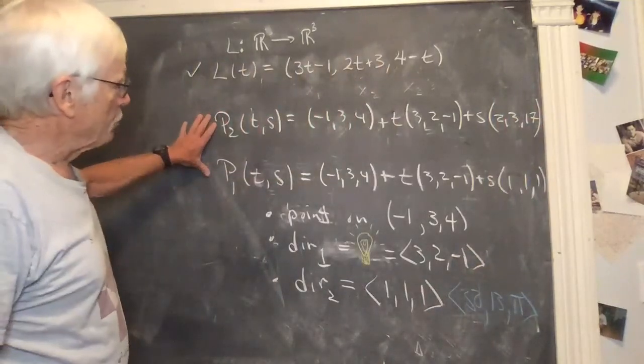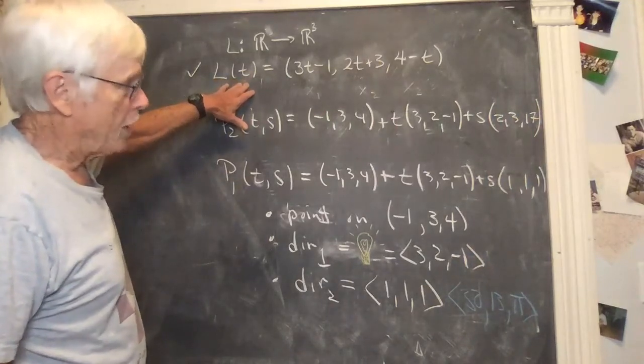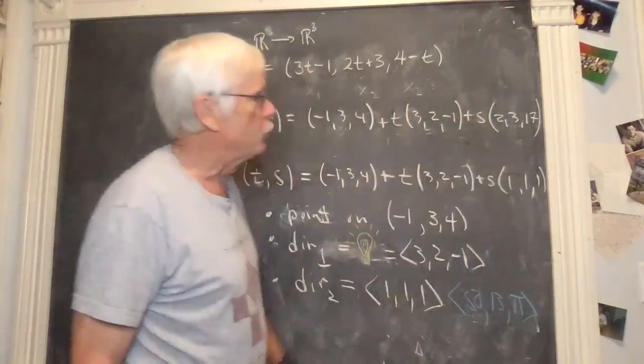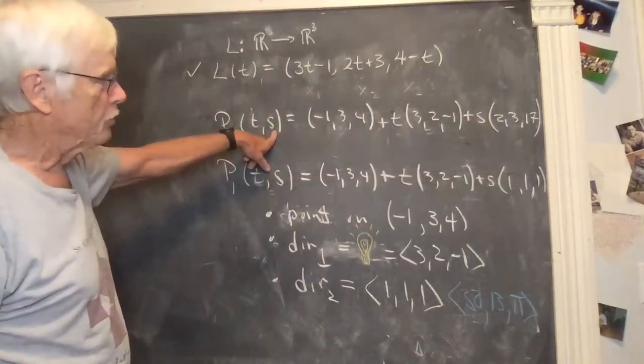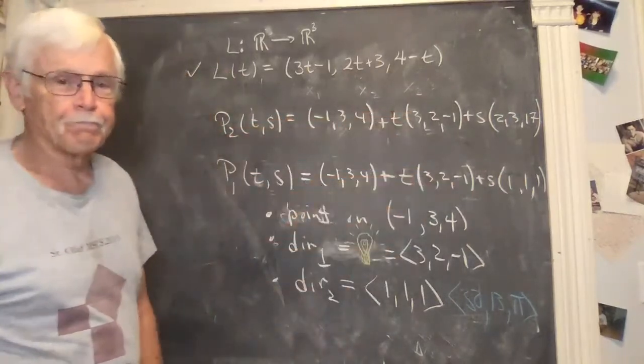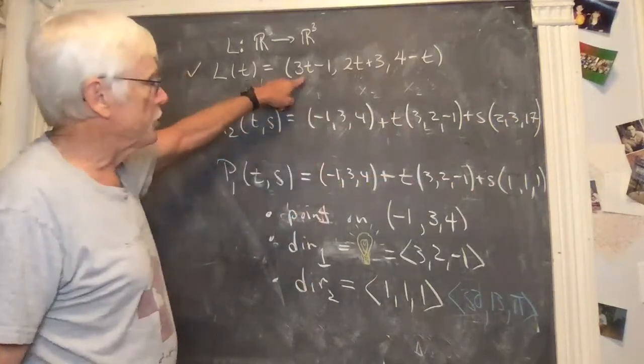So here are two planes. Each of them obviously contains this line. Why? If you take S equal to zero, if you zero out the S part, you get the equation for that line in both cases. So each of these planes contain that equation.